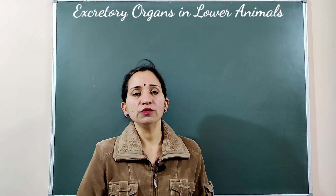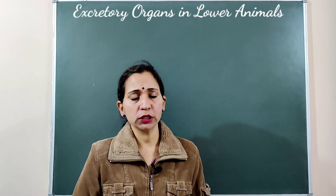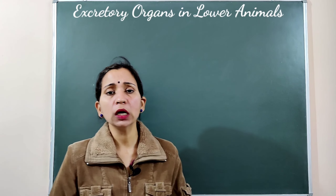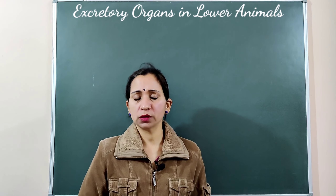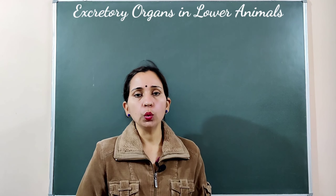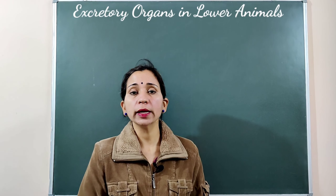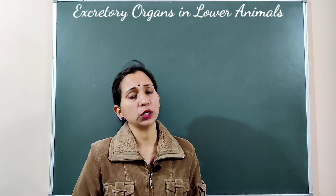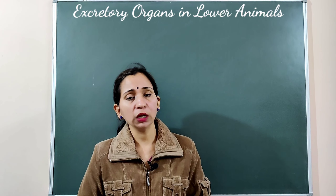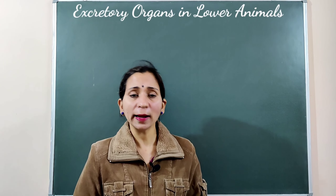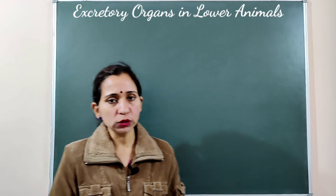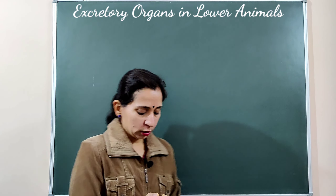Hello students, as you know we have started our chapter on excretory products and their elimination. In the previous videos we discussed about the three different modes of excretion of nitrogenous waste. In today's video we are going to discuss about the excretory organs of invertebrates, including lower and higher invertebrates, and we will see how these animals excrete their waste. We are starting from the lowest group, beginning with the protozoans.